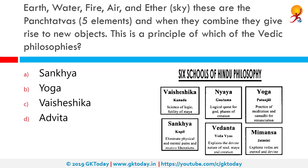Earth, water, fire, air, and ether or sky — these are the Panchatattvas or five elements, and when they combine they give rise to new objects. This is a principle of which of the Vedic philosophies? The correct answer is Vaisheshika. Vaisheshika is one of the six orthodox schools of ancient India, known for its insights in naturalism. According to this school, knowledge and liberation were achieved by a complete understanding of the world of experience.